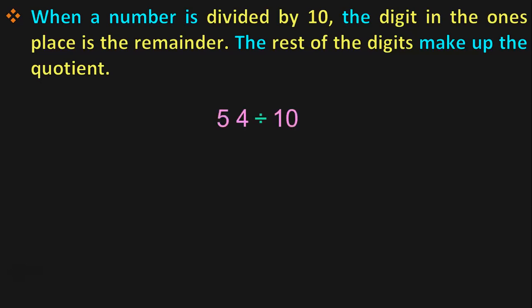54 divided by 10. What does the rule say? The digit in the 1's place is the remainder. Let us draw a line after the 1's place — this will help us easily identify the quotient and the remainder. When you divide by 10, the digit in the 1's place, which is 4, is the remainder. The rest of the digits make up the quotient; the remaining digit is 5. So, the remainder is 4 and the quotient is 5.